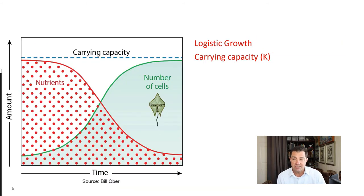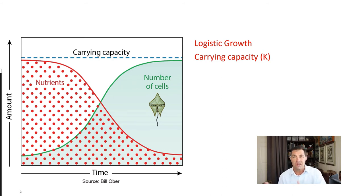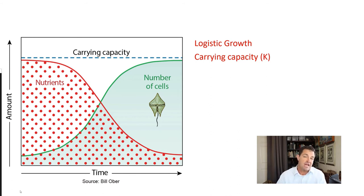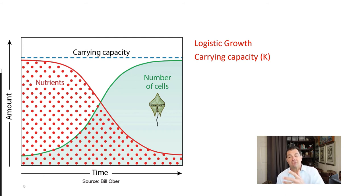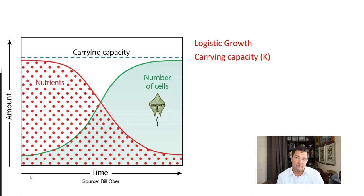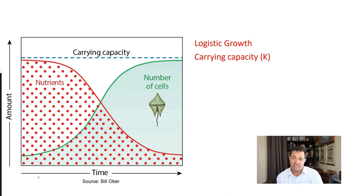In reality, populations don't do that in the wild. Usually they hit some kind of resistance, and we call this the carrying capacity — the maximum number of individuals that can be supported by the environment. Things happen like running out of nutrients or space, and so although the population takes off at first, it tapers off near this carrying capacity, often represented by the letter K.